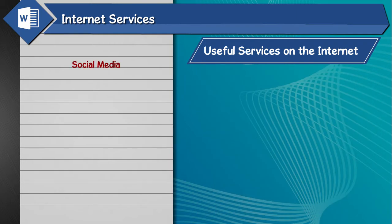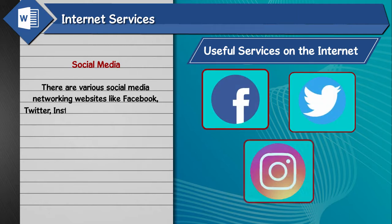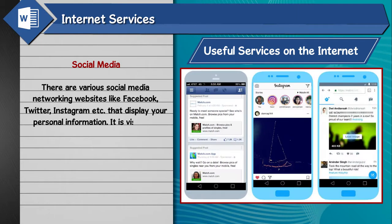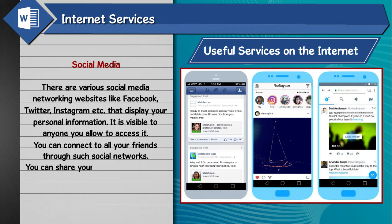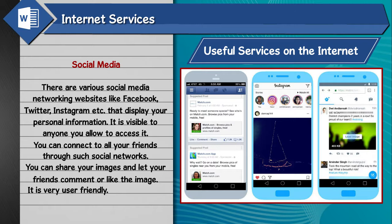Social Media: There are various social media networking websites like Facebook, Twitter, Instagram, etc. that display your personal information. It is visible to anyone you allow to access it. You can connect to all your friends through such social networks, share your images, and let your friends comment or like the image. It is very user friendly, and celebrities and politicians use it to connect to the masses.